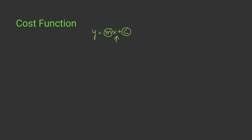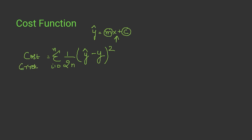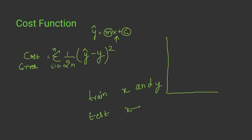Our model will use those random values of m and c along with the input to predict a y value. We then calculate the cost. The cost equals 1 over 2n — where n is the total number of data entries — multiplied by the summation from i equals 0 to n of (y predicted minus y) squared. This is how we calculate the cost, or error, of our linear regression model.